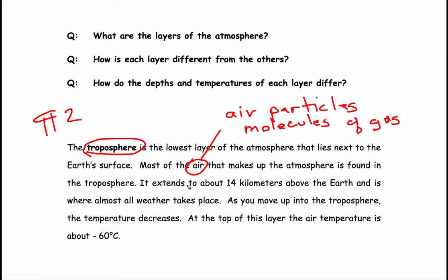The troposphere extends to about 14 kilometers above the Earth and is where almost all weather takes place. As you move up into the troposphere, the temperature decreases. At the top of this layer, the air temperature is about negative 60 Celsius.